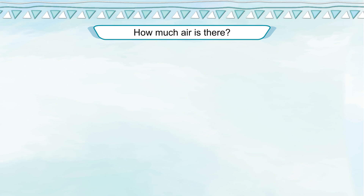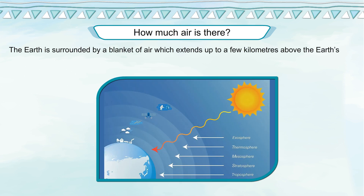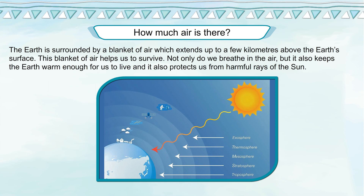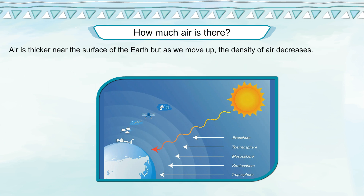The earth is surrounded by a blanket of air which extends up to a few kilometers above the earth's surface. This blanket of air helps us to survive. Not only do we breathe in the air, but it also keeps the earth warm enough for us to live, and it also protects us from harmful rays of the sun. Air is thicker near the surface of the earth, but as we move up, the density of air decreases.